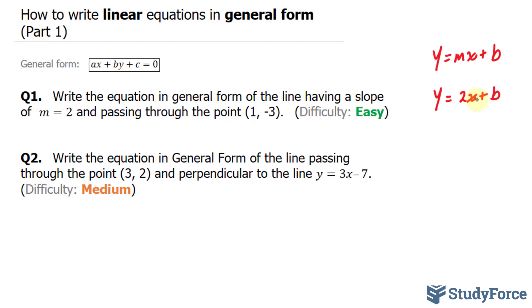Now to find my y-intercept, which is represented by the letter b, I have to apply both 1 and negative 3 into x and y of this equation that I'm building, where I end up with negative 3 equals 2 times 1 plus b.